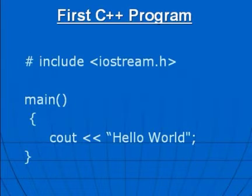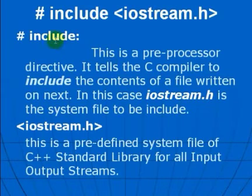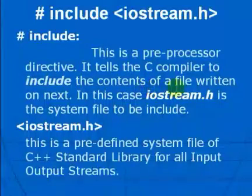We will look at this code line by line and try to understand them. #include - this is a preprocessor directive. It tells the C compiler to include the contents of a file written next. In this case, iostream.h is the system file to be included.